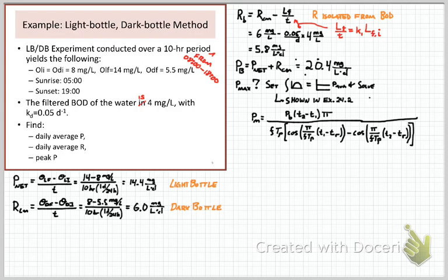And then you've got a couple terms that have cosines, photoperiods, TP's, and pi's, and differences between T1 and TR and T2 and TR. And again, I'd encourage you to check out example 24.2 in the textbook where this equation is derived.